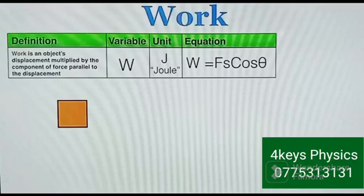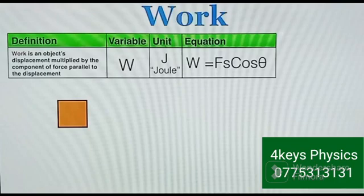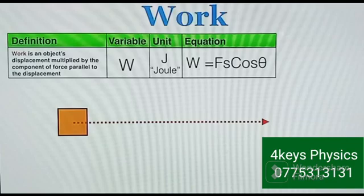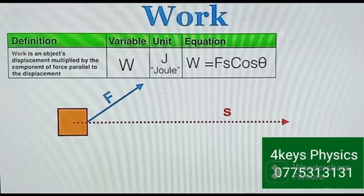In this video we're going to be talking about work. Work is measured in joules and our formula for work is F·s·cosθ, where F is the force applied at an angle to the horizontal, and s is the displacement. Suppose you have a box that you'd like to drag along a displacement s, and you apply a force at an angle. We need to resolve the vertical and horizontal components of force, and it is the force parallel to the displacement that is responsible for doing work.